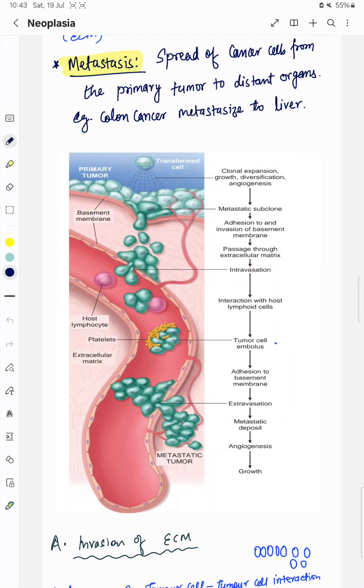Hello everyone, welcome to our channel. Imagine a single notorious cancer cell breaking free from its origin, traveling through bloodstream and invading distant organs. This is metastasis, the deadliest phase of cancer. How does it happen? Let's discuss.